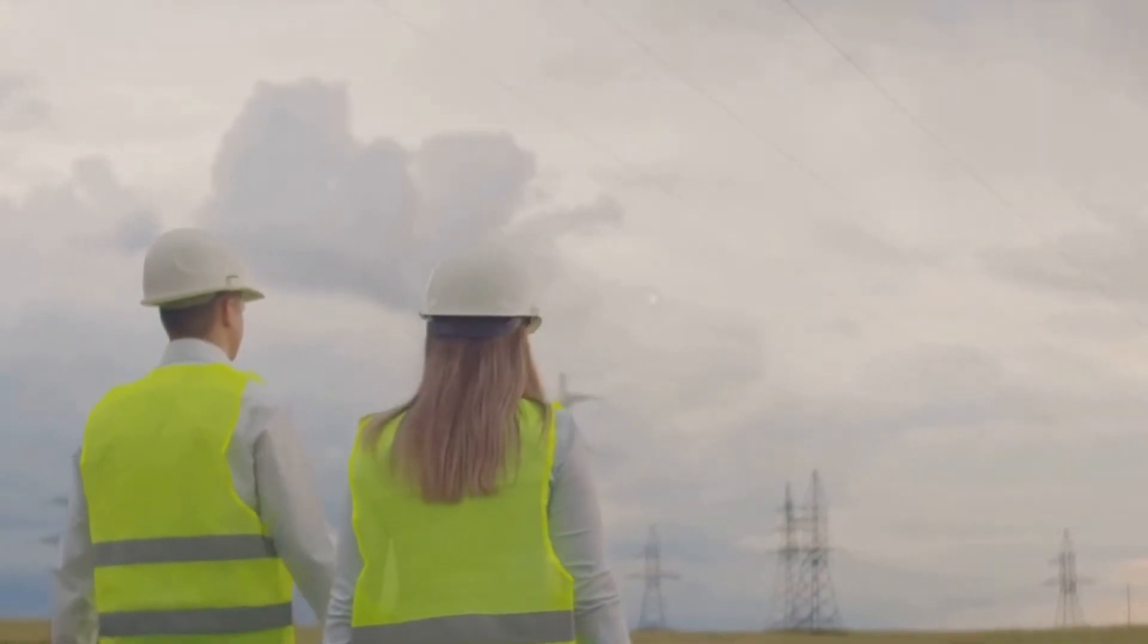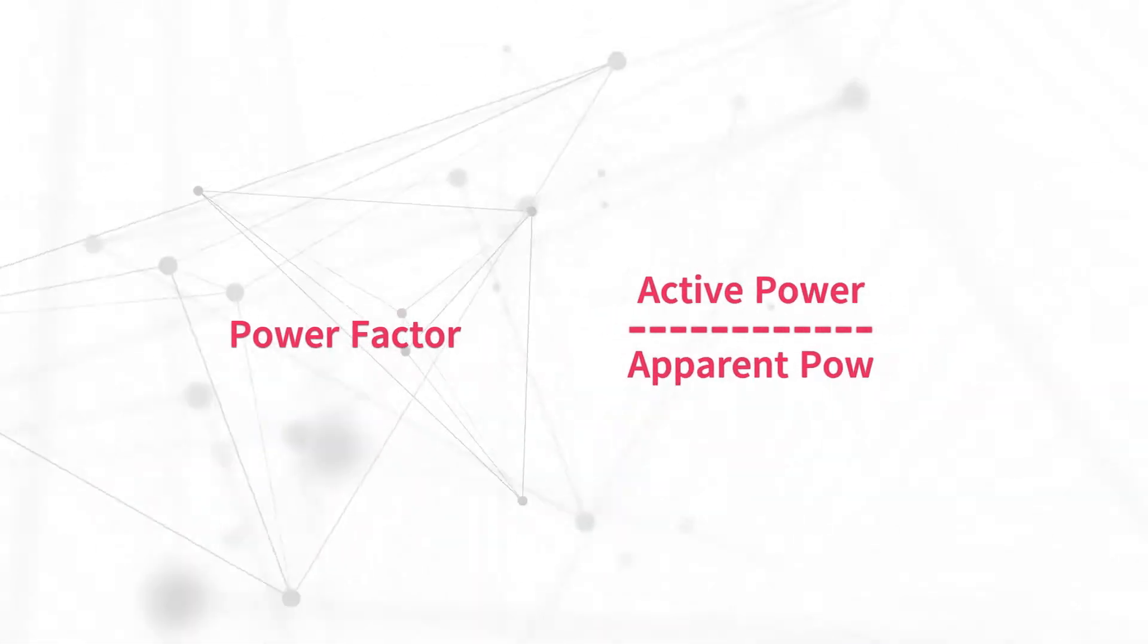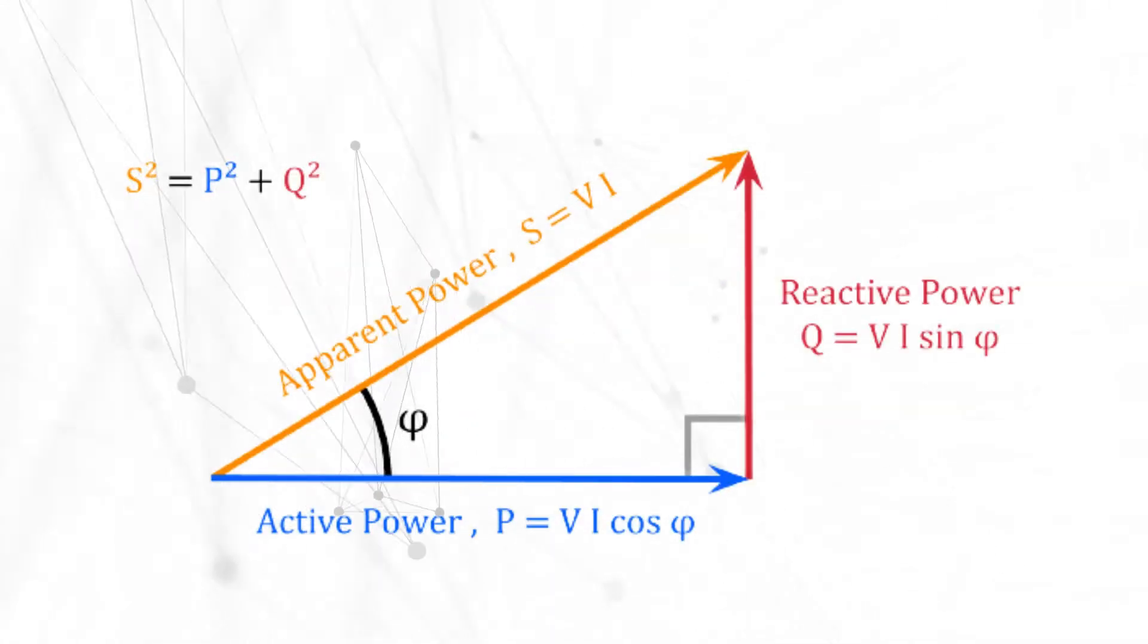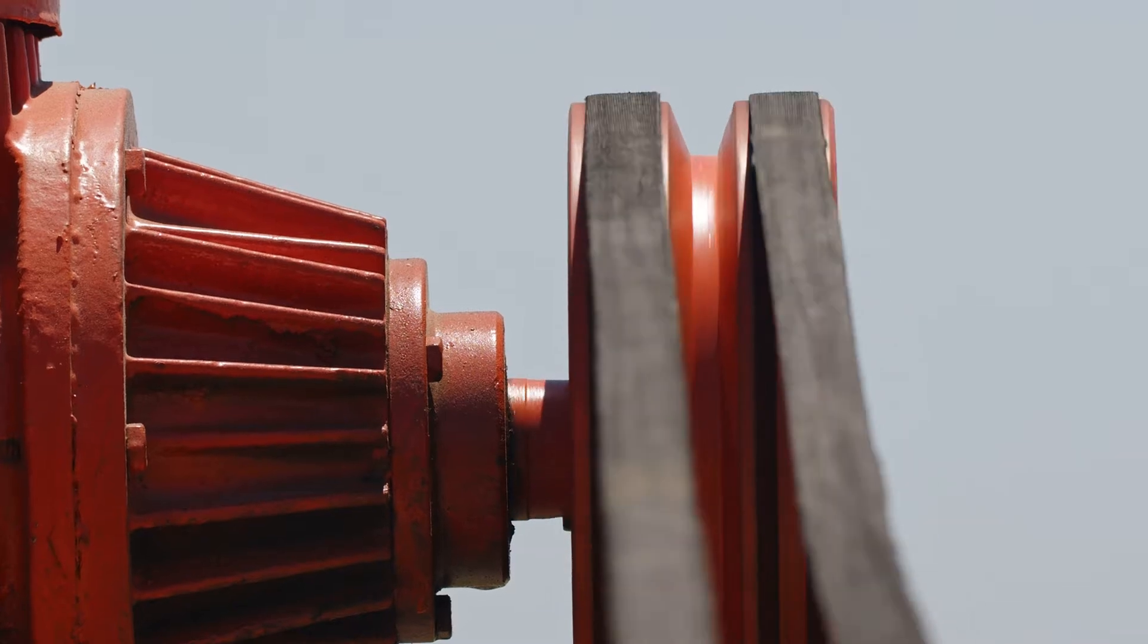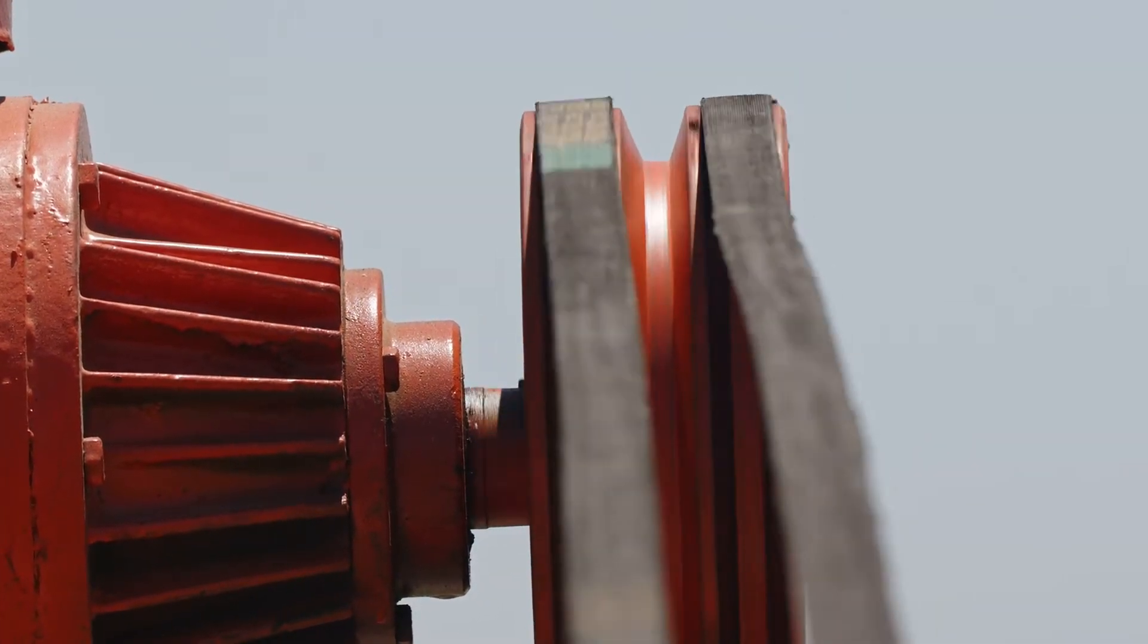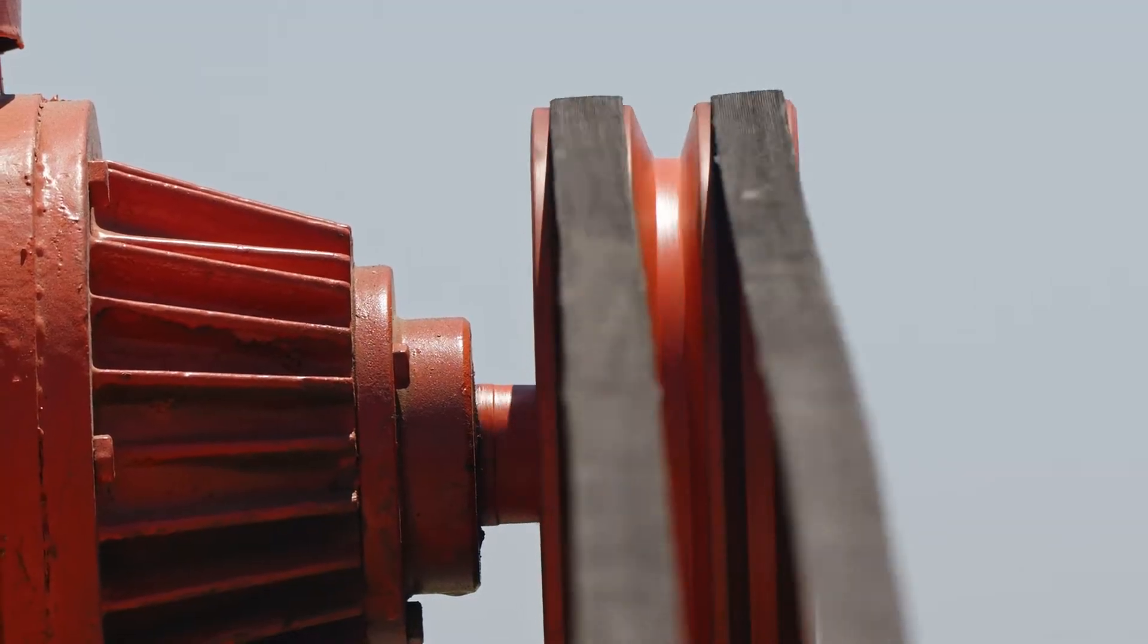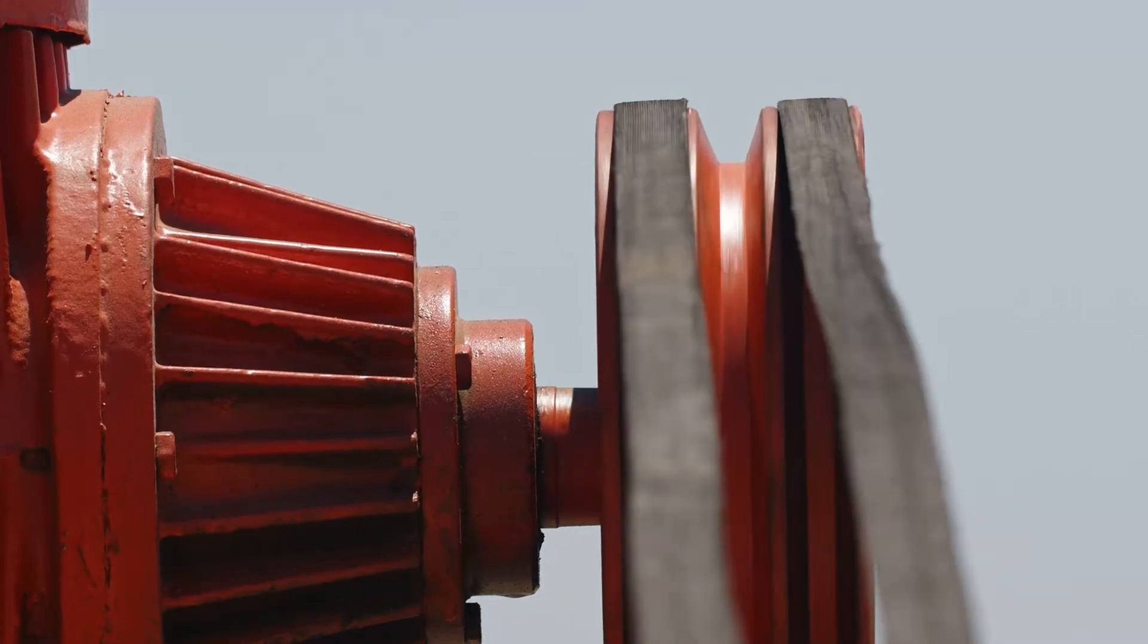Now, the power factor is akin to your rowing efficiency. It's calculated as the ratio of active power to apparent power, which is the vector sum of active and reactive power. The power factor tells us how effectively electrical power is being converted into useful work. A high power factor close to one indicates that most of the power is being used efficiently.